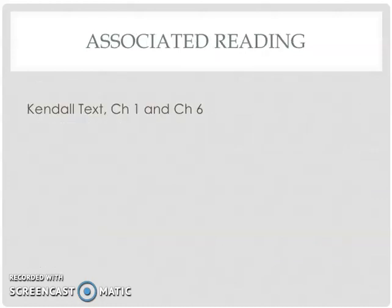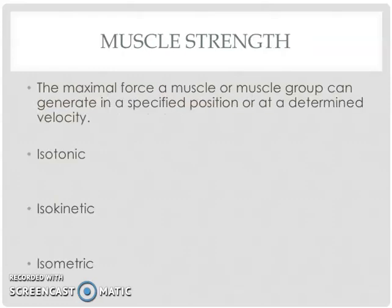This information relates to your Kendall McCreary textbook. We'll begin by talking about muscle strength. Basically, when a muscle contracts, force is generated. Isotonic muscle strength refers to the use of free weights or resistance machines — typical stuff we would do when working out at the gym.